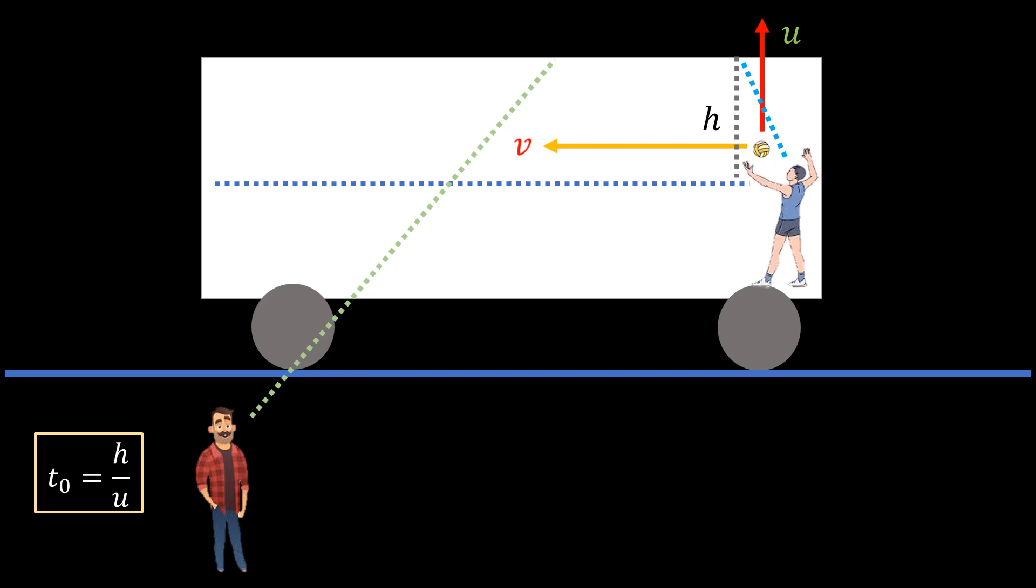Because of these two speeds, the observer on the road will see the ball trace an inclined path, with a speed w which is equal to the resultant of the two speeds. So the observer on the platform sees the ball travel a longer distance s to hit the top of the bus. In his frame of reference, the time t1 that it takes the ball to reach the top is equal to the distance s over the speed w.